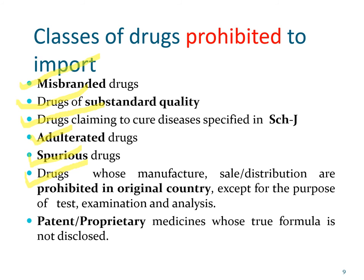Drugs whose manufacture, sale, and distribution is banned in the country of manufacture — however, such drugs may be imported for the purpose of examination, test, and analysis. Also, patent and proprietary medicines whose true formula is not disclosed are prohibited from import. So the drugs for which import is prohibited are: misbranded, adulterated, spurious, and substandard drugs; drugs claiming to cure Schedule J diseases; drugs banned in their country of manufacture; and drugs of unknown composition.